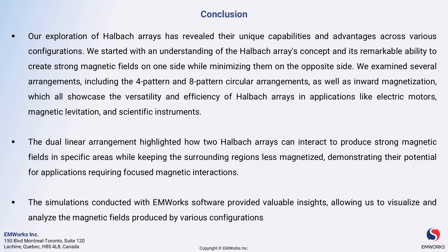We then explored various arrangements, starting with the four-pattern and eight-pattern circular arrangements. Next, we discussed the inward magnetized arrangement, where all magnets point inward, concentrating the magnetic field at the center — ideal for applications like magnetic levitation systems. Following that, we examined the dual linear arrangement, where two halbach arrays work together to create a strong magnetic field between them while minimizing it on the ends.